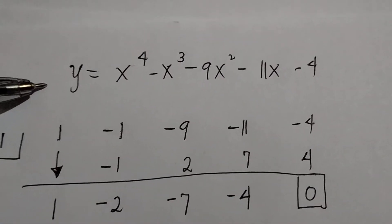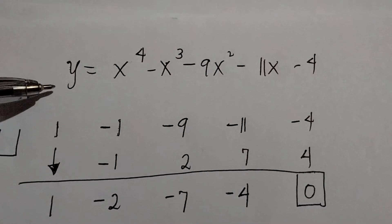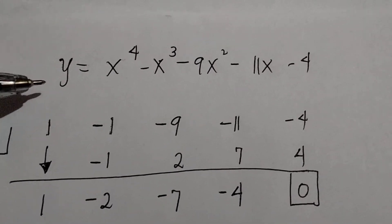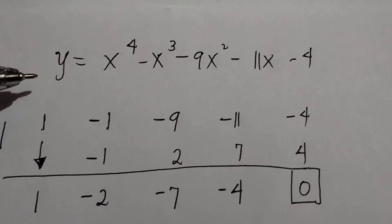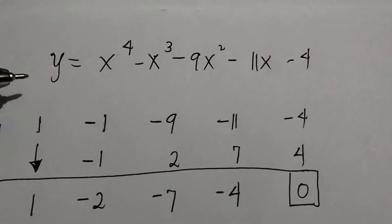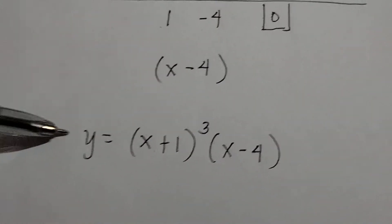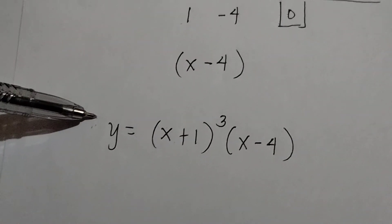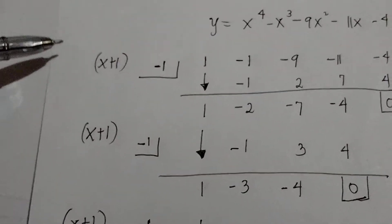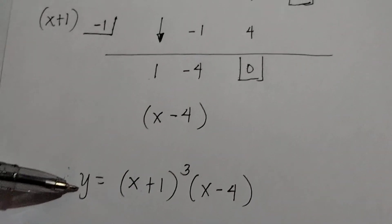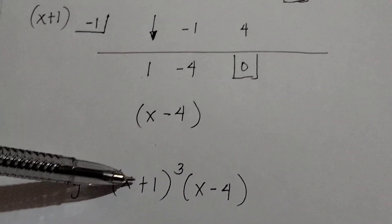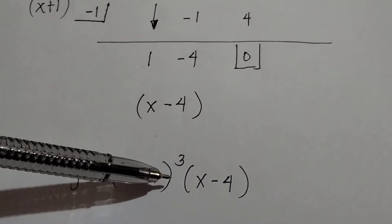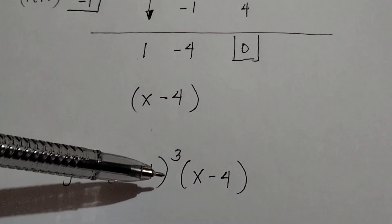Therefore, y equals x raised to the 4th minus x cubed minus 9x squared minus 11x minus 4 in factored form becomes y equals the cube of the quantity x plus 1 times the quantity x minus 4.